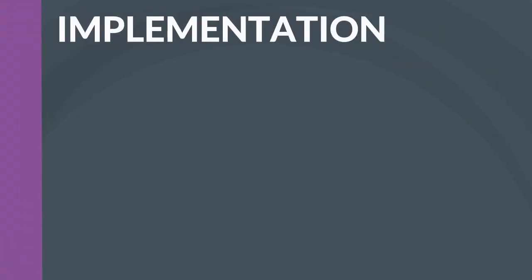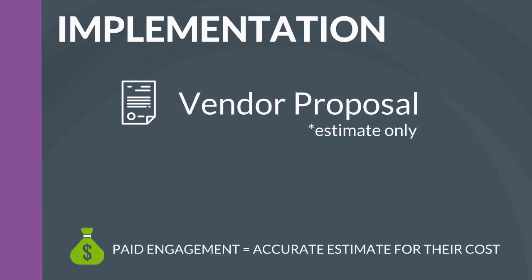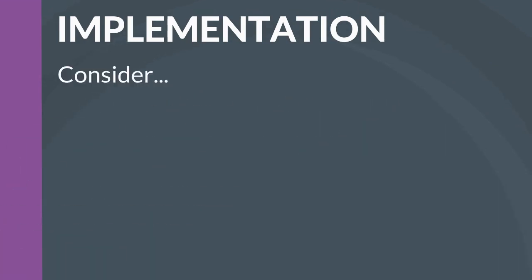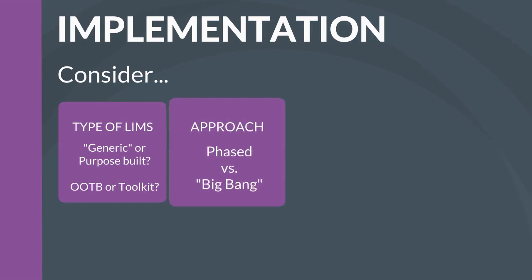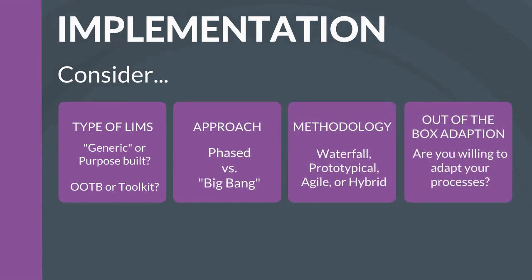Implementation. The cost of your LIMS implementation will depend on many factors. Typically, implementation costs quoted in vendor proposals are estimates only. Most vendors require a paid engagement to accurately estimate their costs for system implementation. Besides the typical size and scope issues that affect costs, other factors to consider include the type of LIMS you are implementing, the LIMS implementation approach and methodology you employ, and your willingness to adapt your lab processes to fit out-of-box functionality.